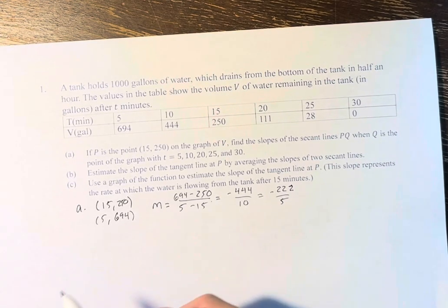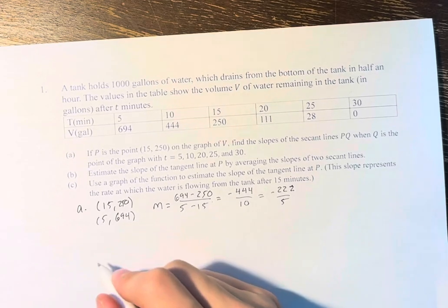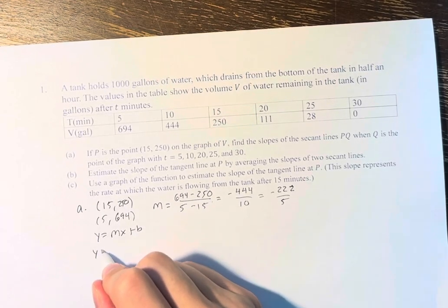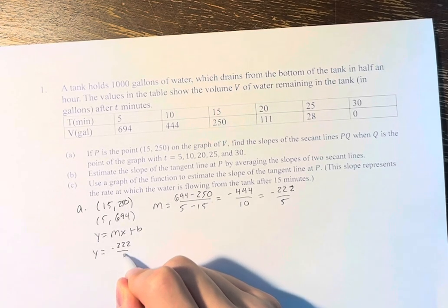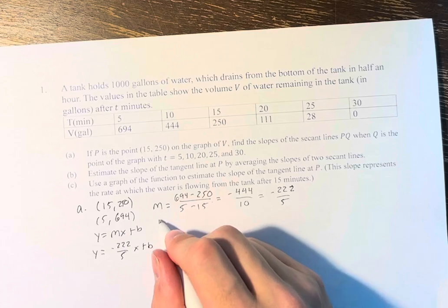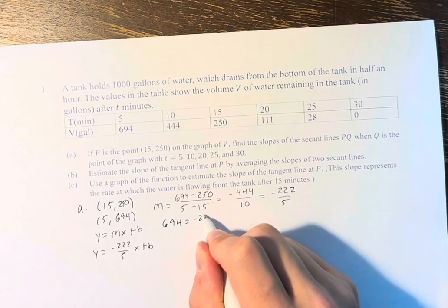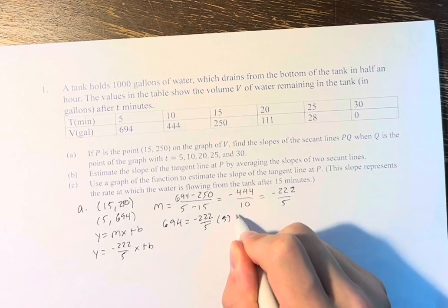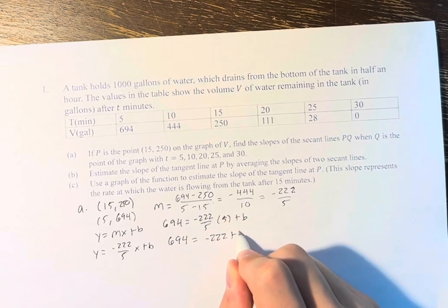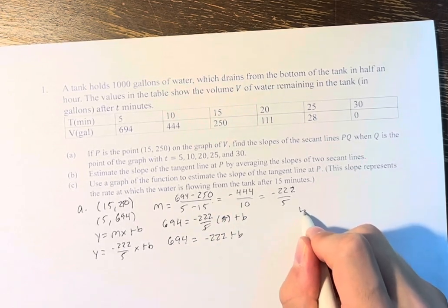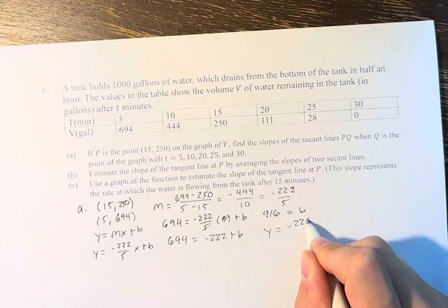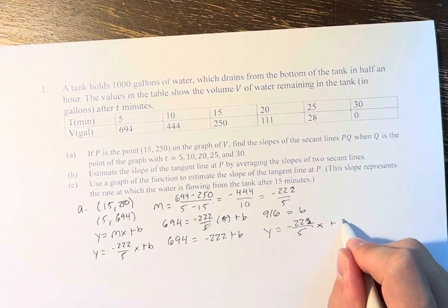And we can also find the actual full equation of this line. We do that briefly. If we have Y equals MX plus B we know that it's negative 222 over 5 X plus B. Plugging in one of our points we get 694 is equal to negative 222 over 5 times 5 plus B. 694 is therefore equal to negative 222 plus B because these 5s cancel. Therefore B is equal to 916 and the equation is negative 222 over 5 times X plus 916.